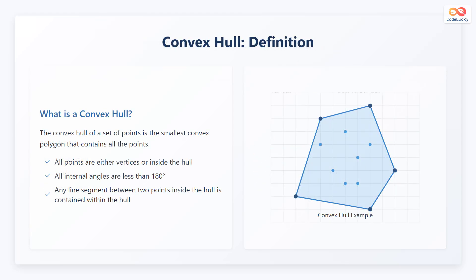Let's begin by defining what a convex hull is. The convex hull of a set of points is the smallest convex polygon that contains all of the points. Now let's look at some properties.